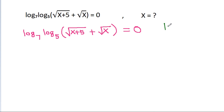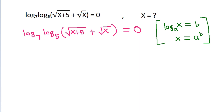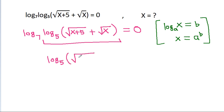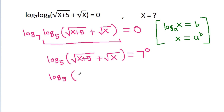If log base a of x is equal to b, then x is equal to a to the power b. So here, we have log base 7 of this equal to 0. So log base 5 of (square root of (x plus 5) plus square root of x) will be equal to 7 to the power 0, which is 1.